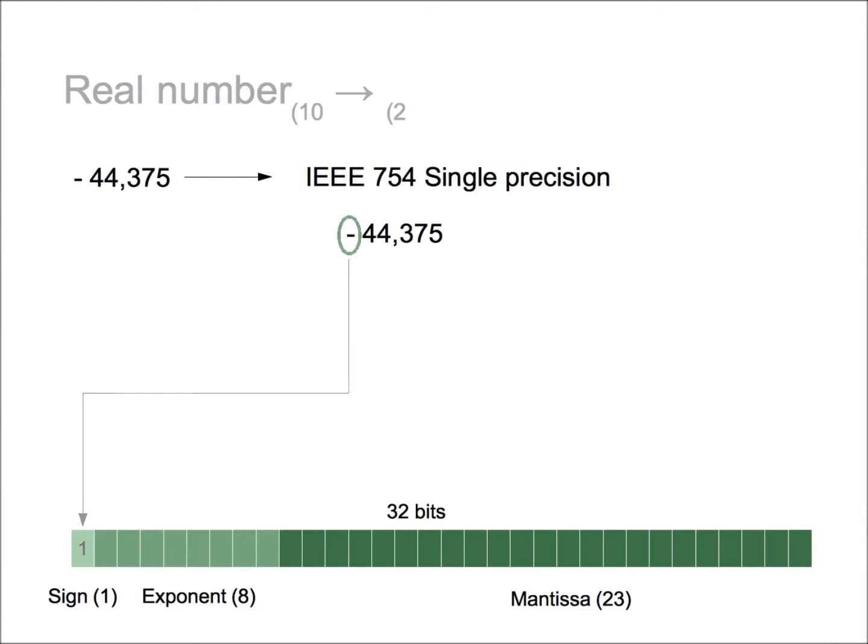Now we are going to convert the number into binary code. And then we are going to normalize it. We want the comma was before the first bit.